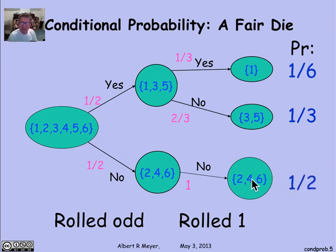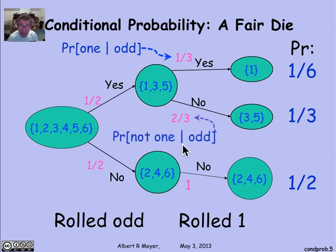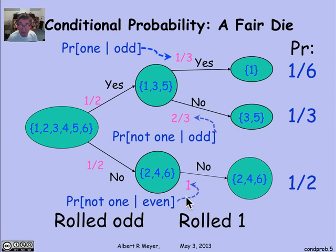What's going on here? The number 1/3 is what we said was the probability of rolling a 1, given that you rolled an odd number — that's where this label came from. Likewise, 2/3 is the probability that you didn't roll a 1, given that you rolled an odd number. And the final number is the probability that you didn't roll a 1, given that you rolled an even number — and it's certain.